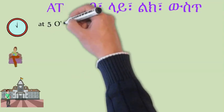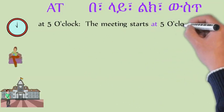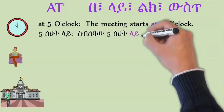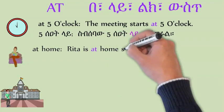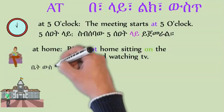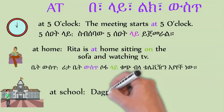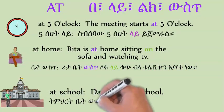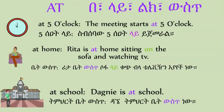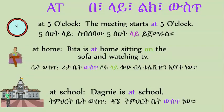At home — Rita is at home sitting on the sofa and watching TV. At school — Danie is at school. At five o'clock — the meeting starts at five o'clock.